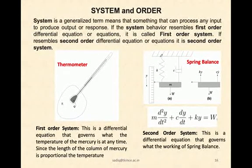Another concept is system and order. System is a generalized term, anything that can process any input to produce an output or response. If the system behavior resembles a first order differential equation, it is called a first order system. If it resembles a second order differential equation, then the system can be called a second order system.